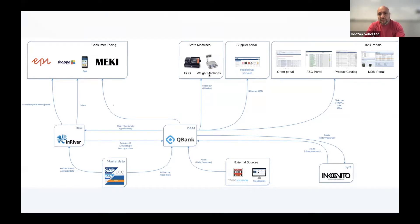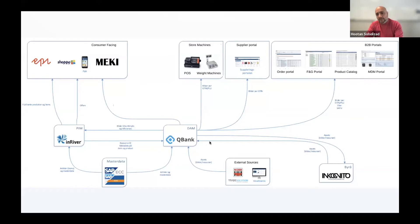When distributing and publishing assets to channels, QBank automatically generates the right format for that channel. A weight machine, for instance, only requires a low-resolution thumbnail of a product photo, while websites and e-commerce need higher-resolution assets. If the product photos are not available in these tools, the product owner is sent an email where they can decide to create a mood board in QBank or ask the agency for photo shoots. Once the agency has done the photo shoot, or the vendor has uploaded photos, everything is automatically imported to QBank and distributed to the right channels based on photo quality and which channels the product should be available in.